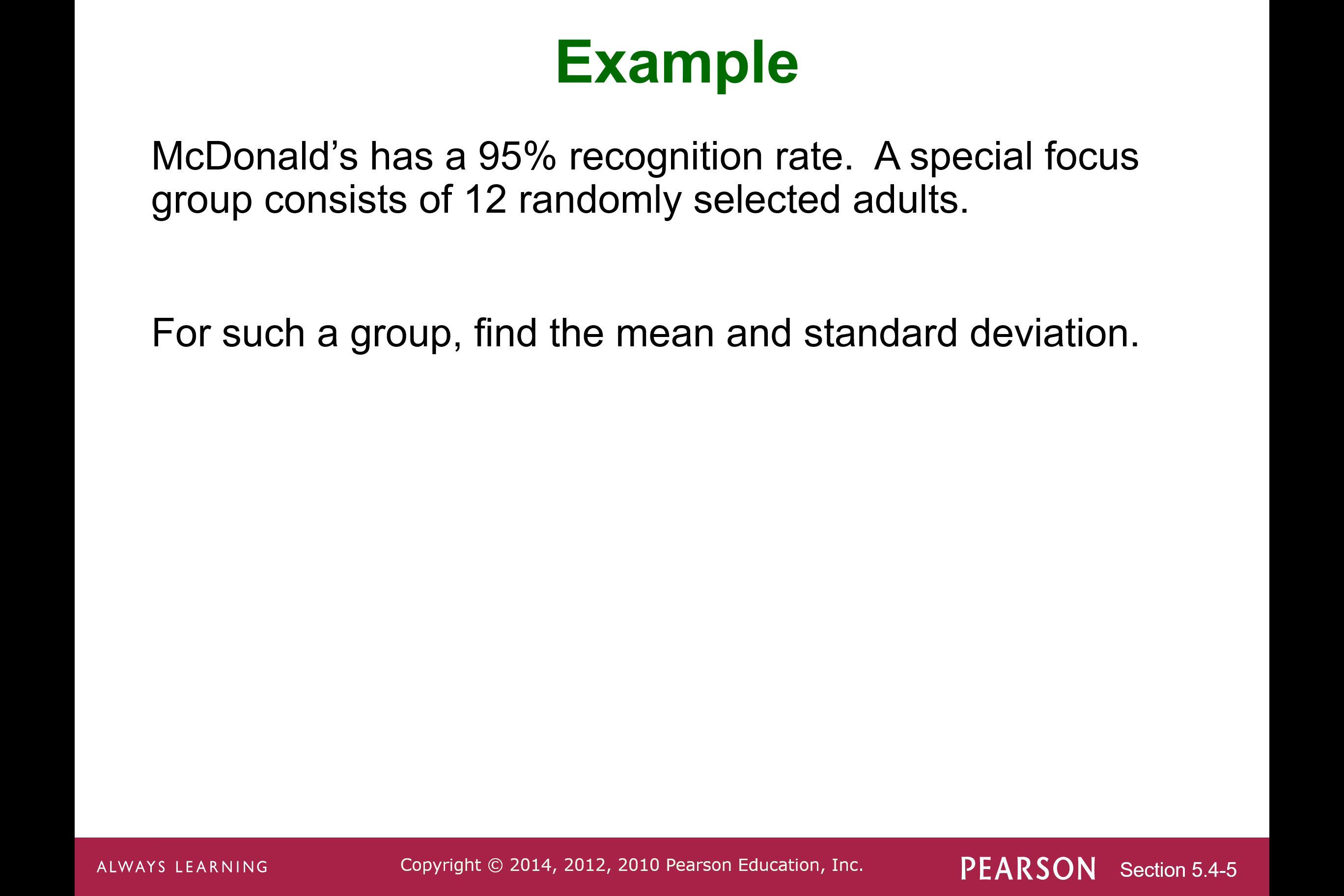Now let's take a look at this example. McDonald's has a 95% recognition rate. This is p, probability of success, so p equals 0.95. We know q must be 1 minus p, probability of failure, so 1 minus 0.95 equals 0.05. A special focus group consists of 12 randomly selected adults. This is sample size, number of fixed trials is 12. Find the mean and standard deviation.